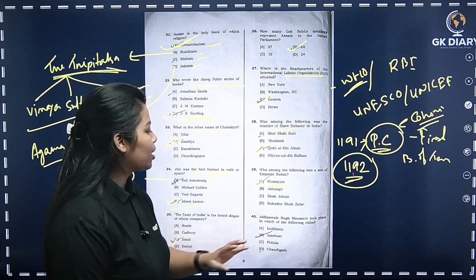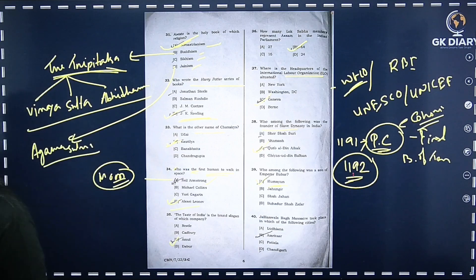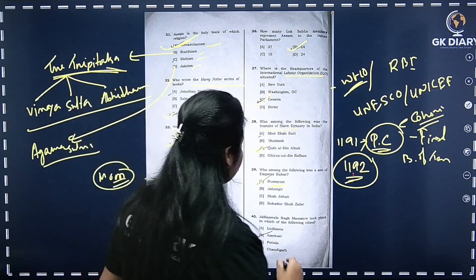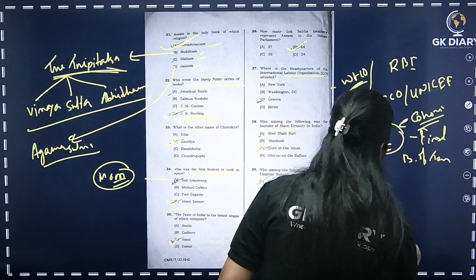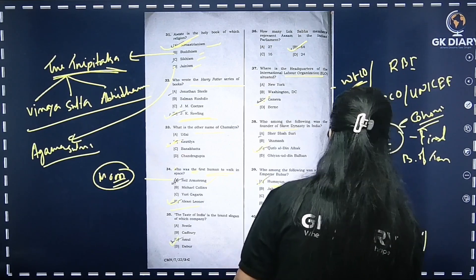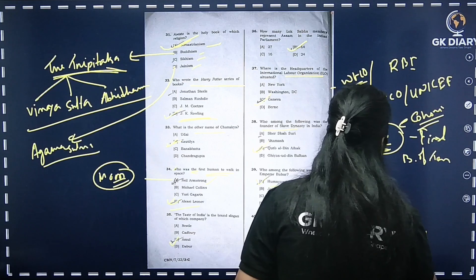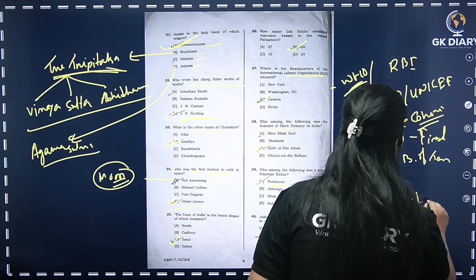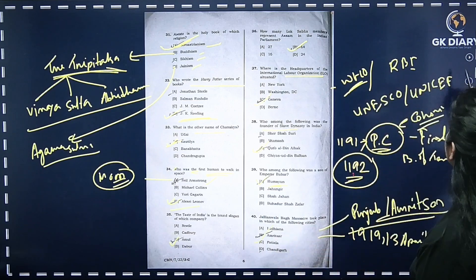Jallianwala Bagh massacre took place in which of the following cities? It happened on 13 April 1919 in Amritsar, Punjab. Punjab has the domain of the Amritsar event. The correct option is B.